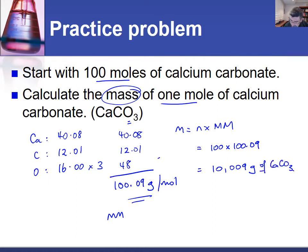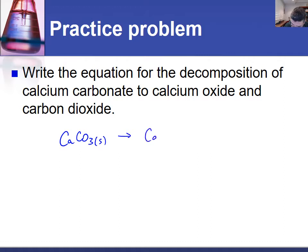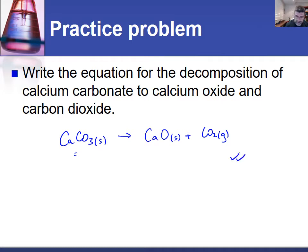So we have 10,009 grams of calcium carbonate. Now let's write the equation for the decomposition of calcium carbonate to calcium oxide and carbon dioxide. CaCO3(s) → CaO(s) + CO2(g). This one is already balanced — one oxygen is taken to leave CO2, so it's a nice easy one.